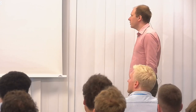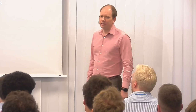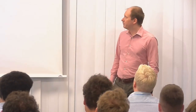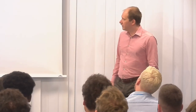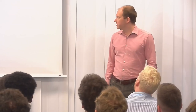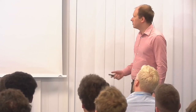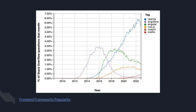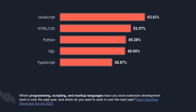React is the most popular user interface development framework in the world by a lot. Since 2014, when it was released by Facebook, it's taken the world by storm. You can look pretty much anywhere and see that React is totally dominant in this ecosystem. The language that React is designed for primarily is JavaScript, which is the most popular programming language in the world, also by a lot. Haskell is not.